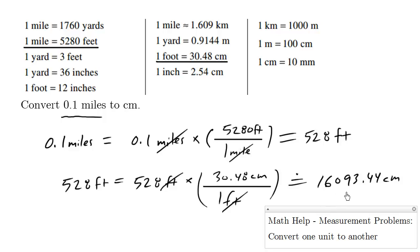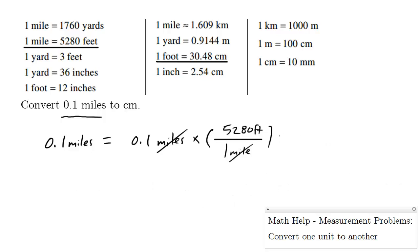Notice how our final answer here is 16,093 centimeters approximately. We could have done this question in a different way. So what we have here is 0.1 miles equals 528 feet. But we could have done this in one shot. So this is fine, but let me just show you something here. So imagine we were here to the point where we're converting miles to feet.